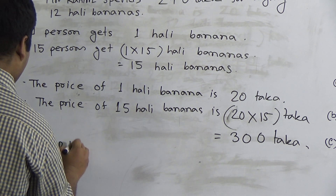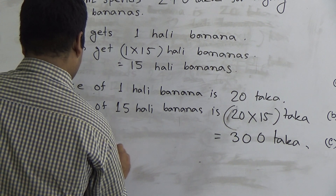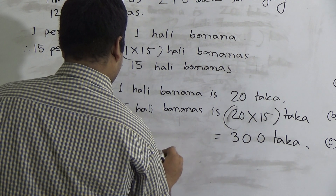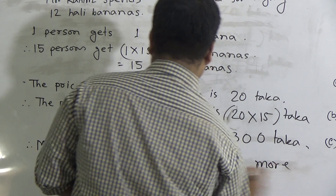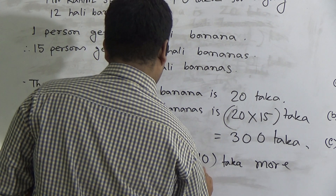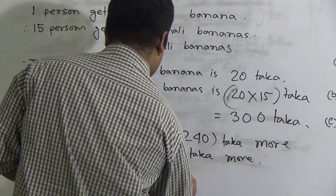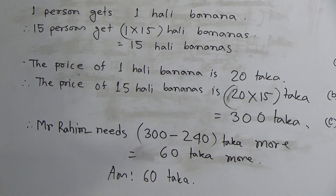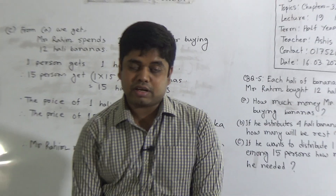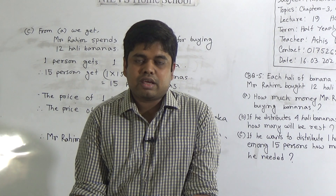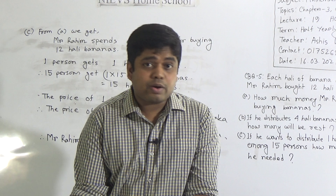Mr. Rohim needs 300 minus 240 taka more, which is 60 taka more. The answer is 60 taka. This is question C. Dear students, this is also your SW. You must do this SW in your SW copy and submit it regularly at school every Saturday between 9 a.m. and 3 p.m. Our today's lecture is finished. Keep practicing at home. Abide by your parents. Assalamu alaikum.